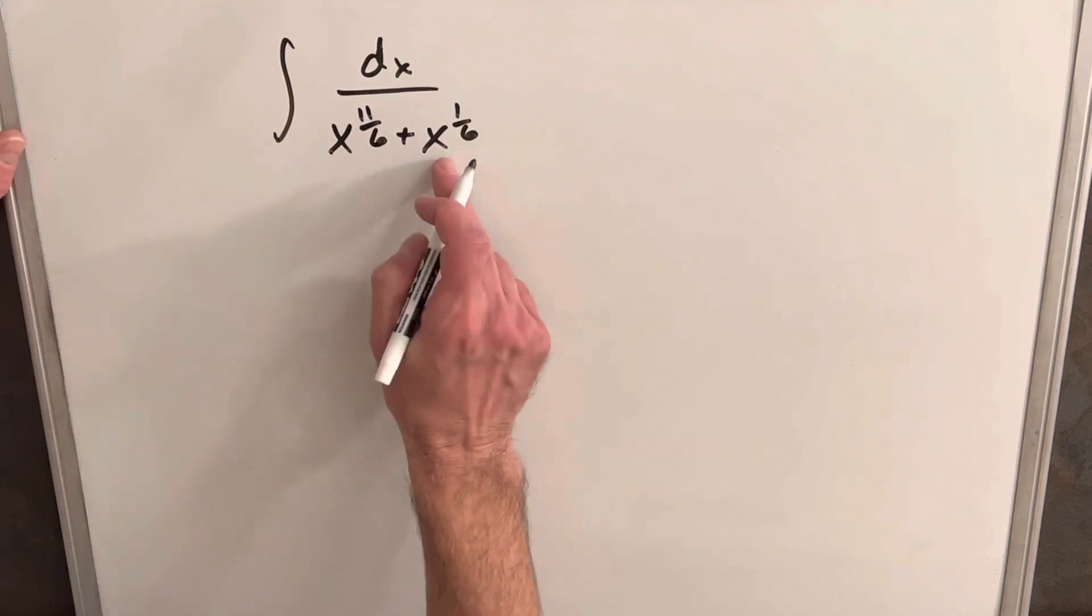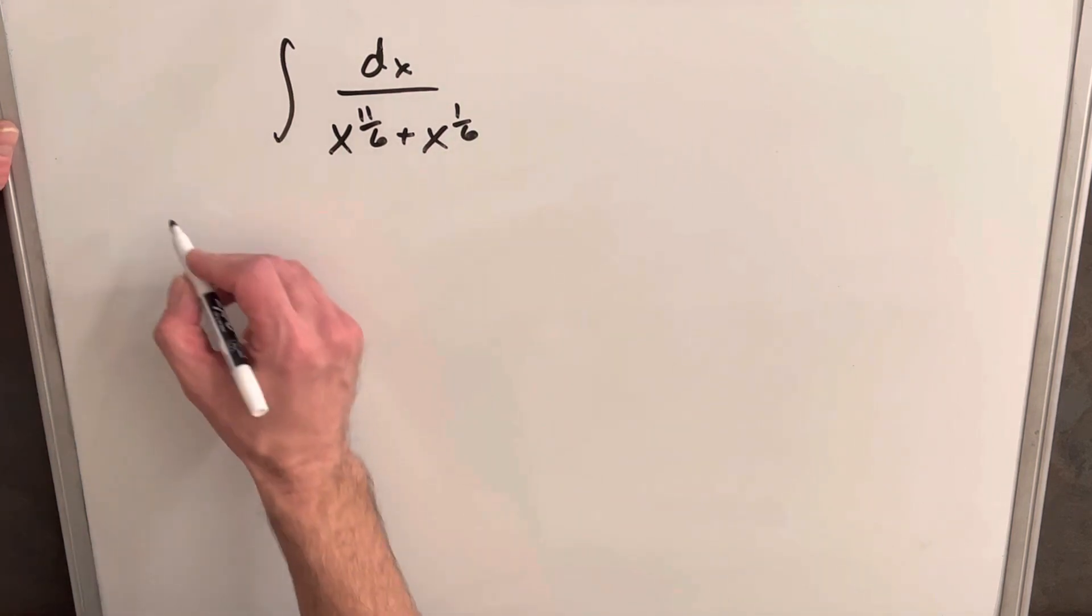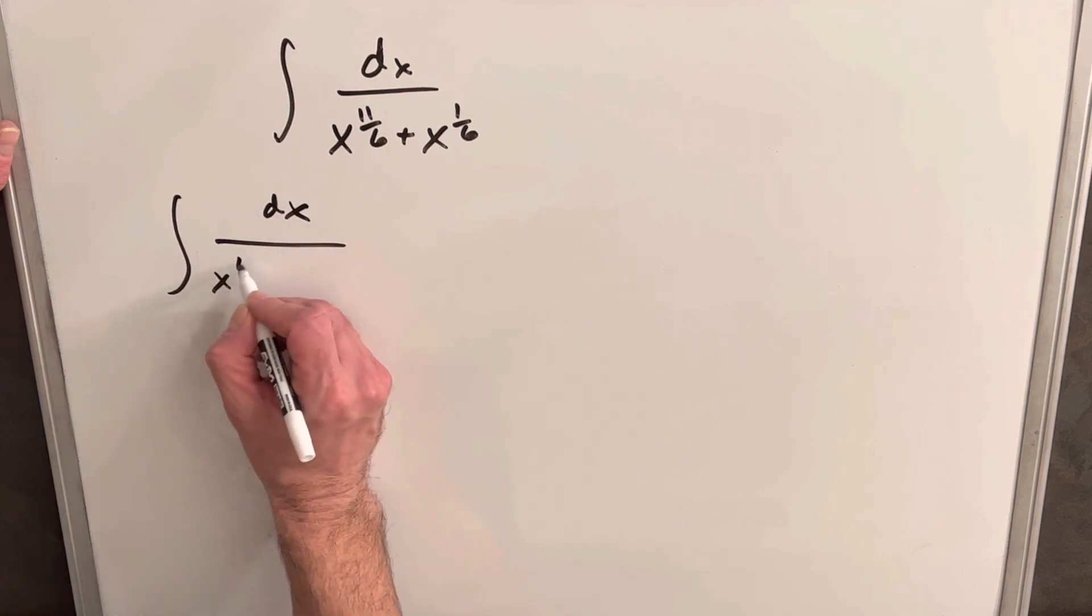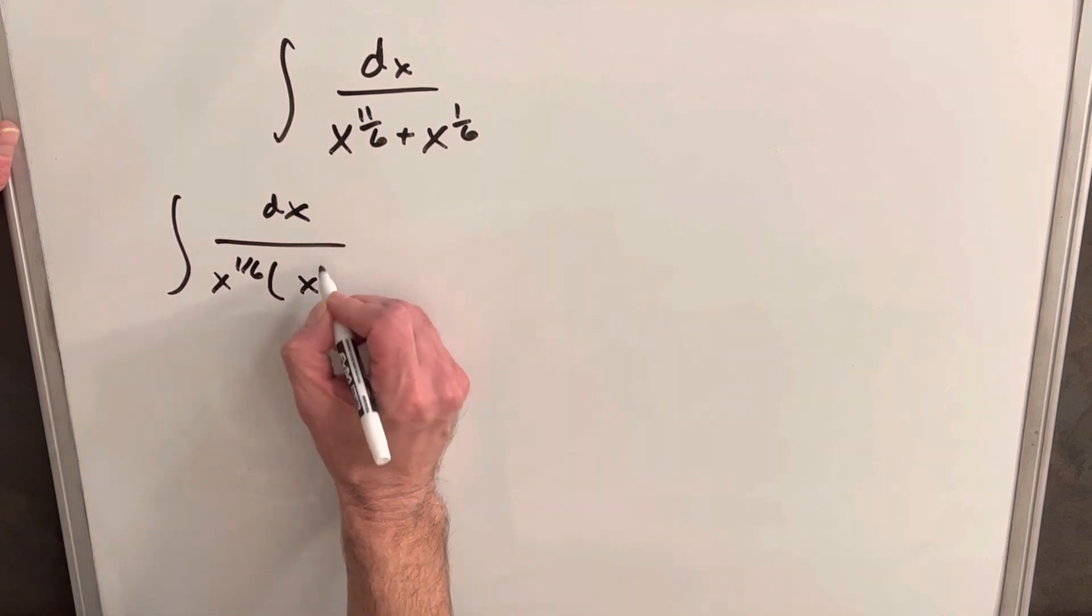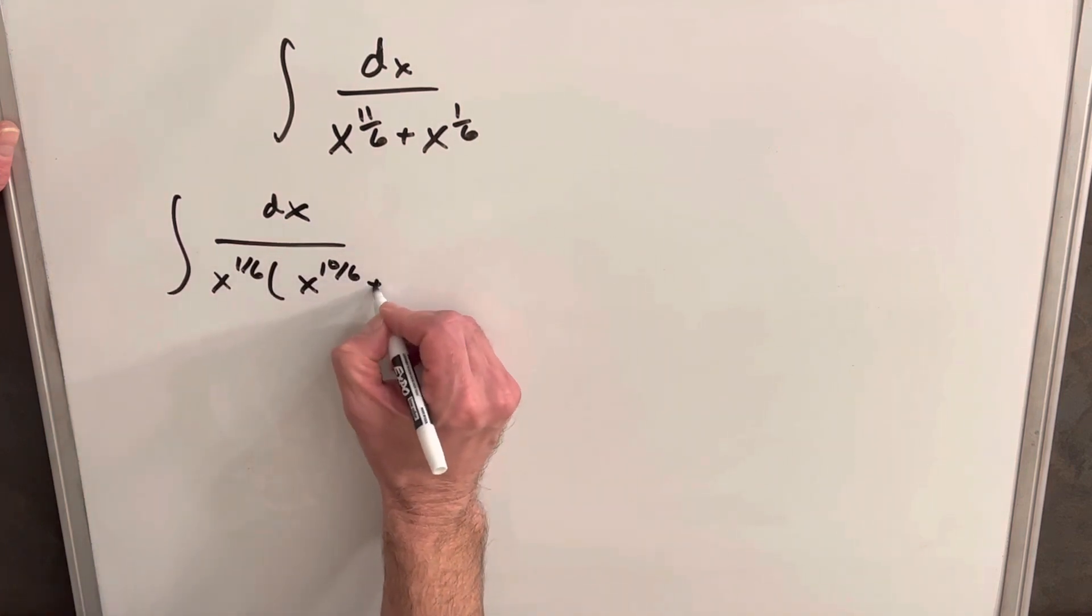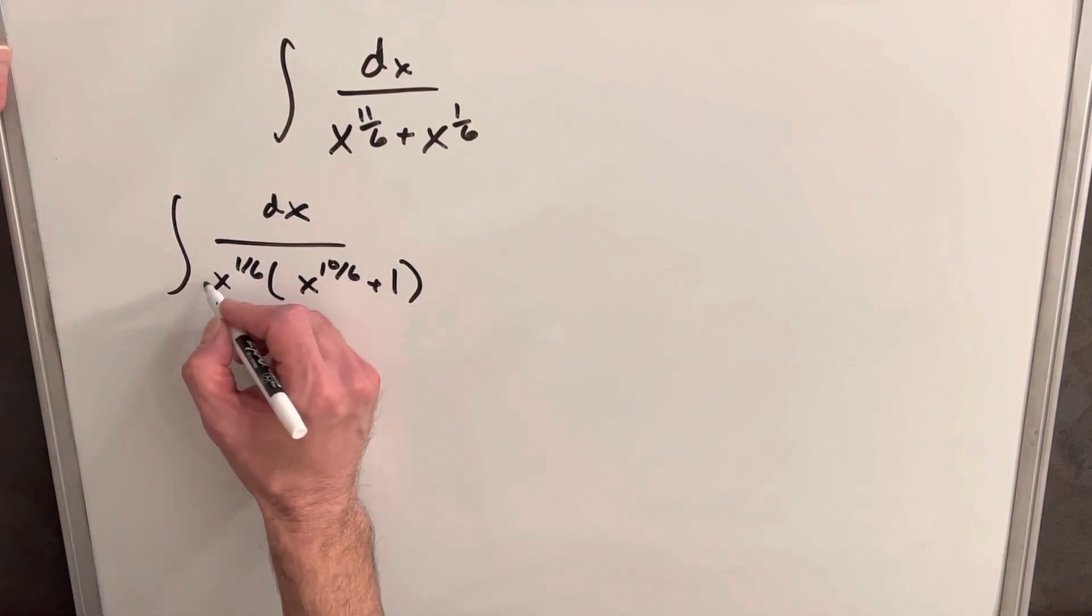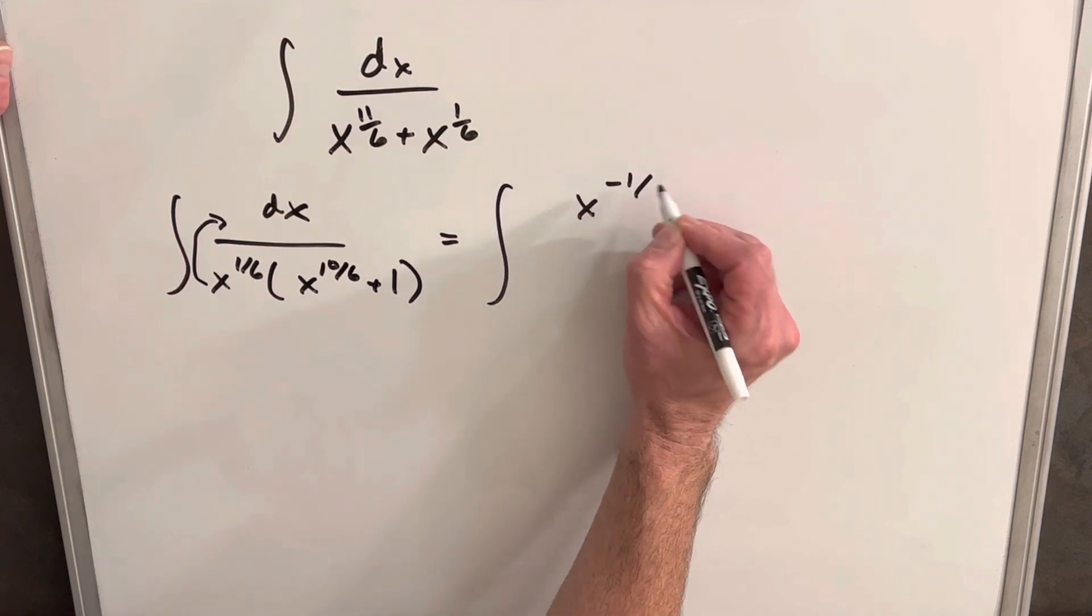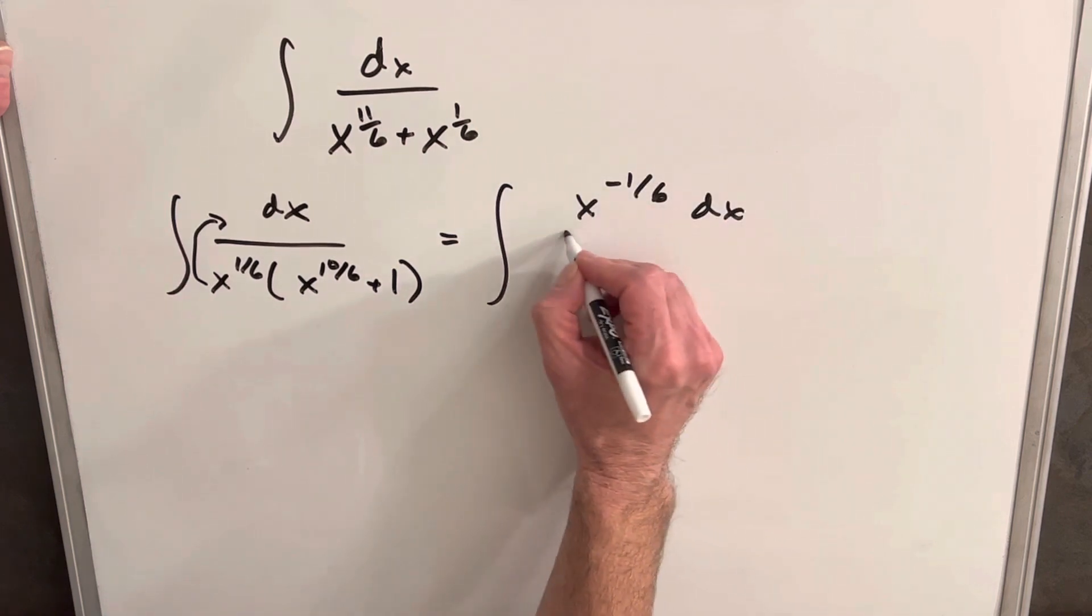So for my first step, I'm going to factor out an x to the 1 sixth. So we'll write this, pull out x to the 1 sixth, and we'll have here x to the 10 over 6 plus 1. Then I just want to write this in the numerator, so we'll put this up here as x to the minus 1 over 6 dx.